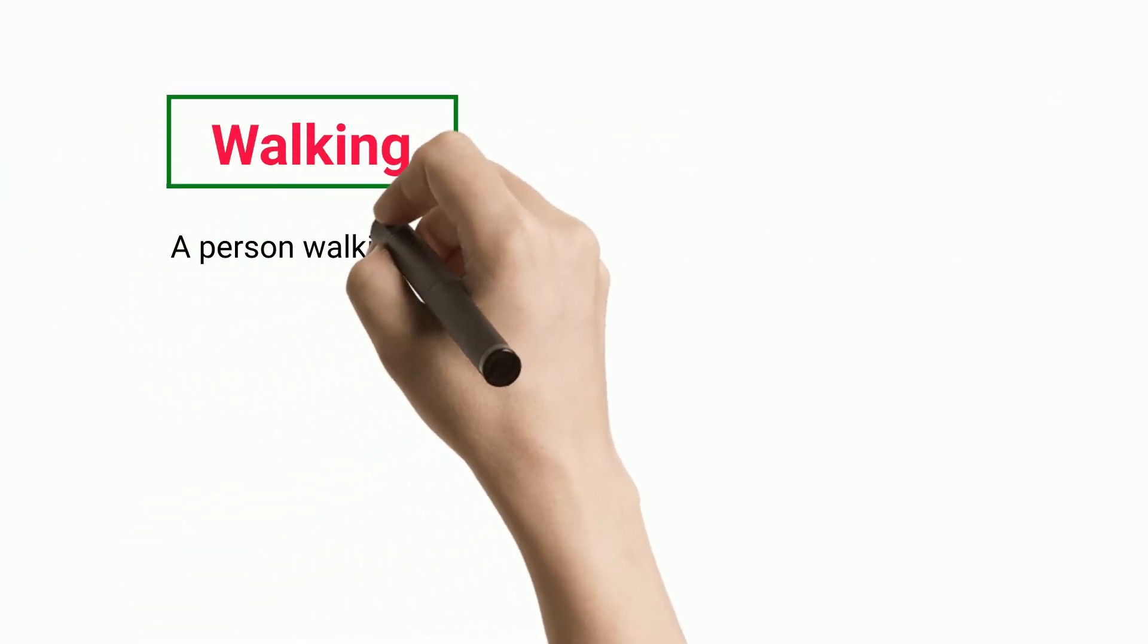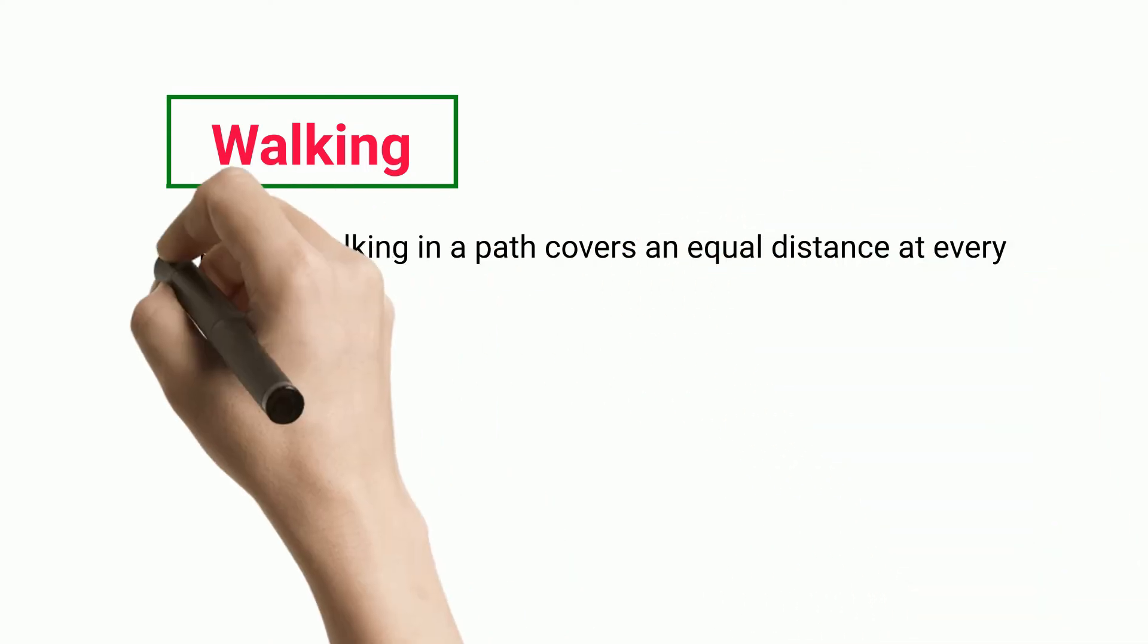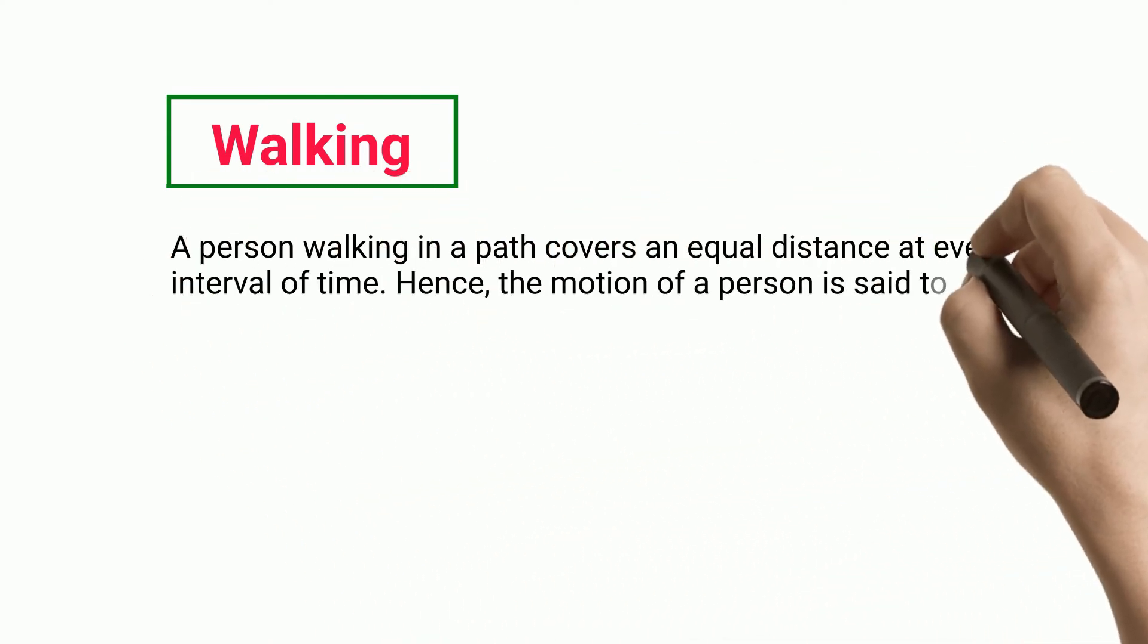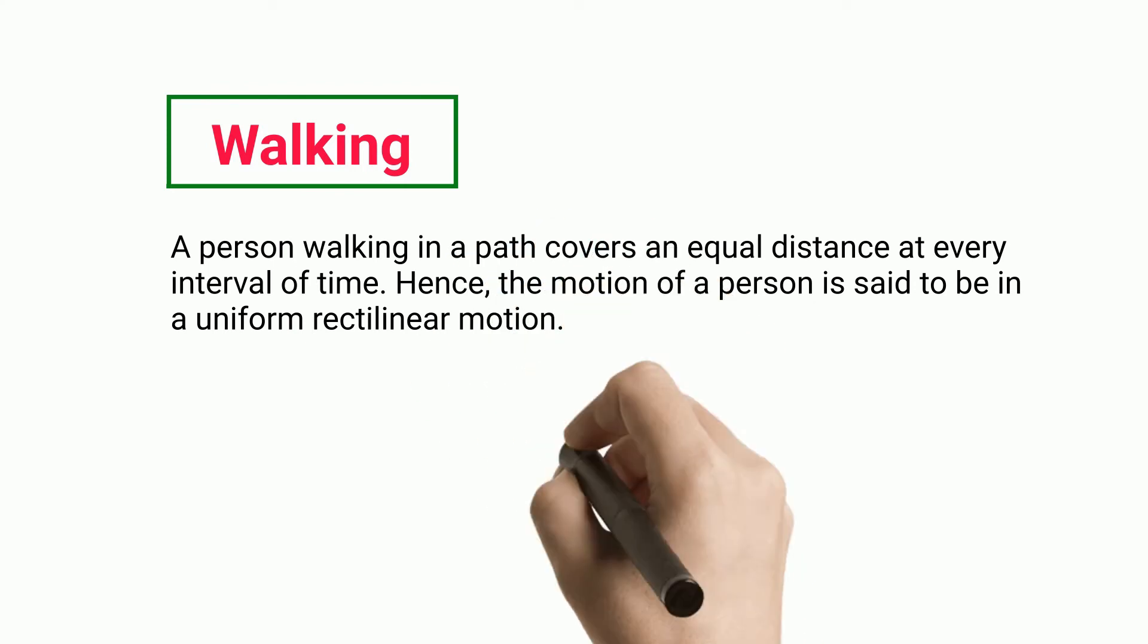Walking: A person walking in a path covers an equal distance at every interval of time. Hence, the motion of a person is said to be in a uniform rectilinear motion.